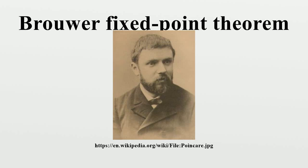In the context of this work, Brouwer also generalized the Jordan curve theorem to arbitrary dimension and established the properties connected with the degree of a continuous mapping. This branch of mathematics, originally envisioned by Poincaré and developed by Brouwer, changed its name: in the 1930s, analysis situs became algebraic topology.